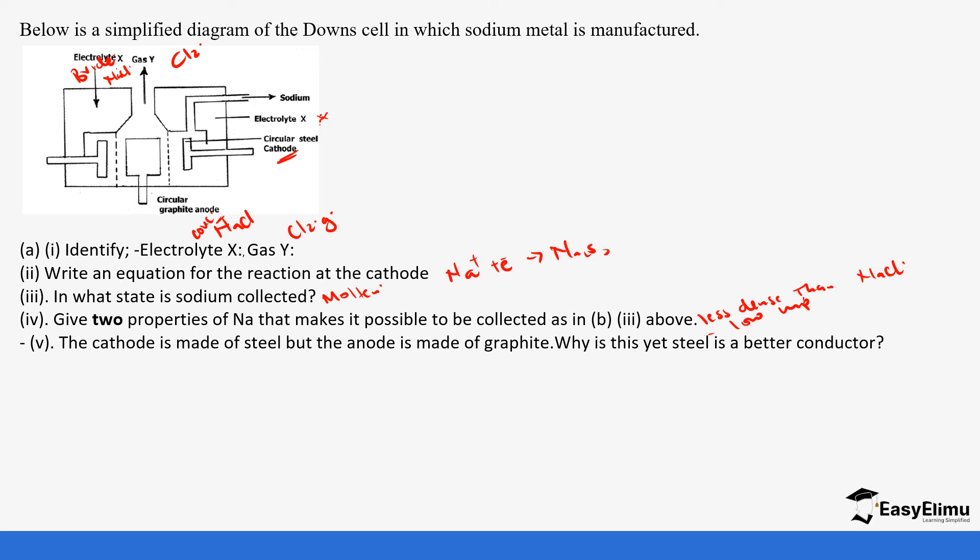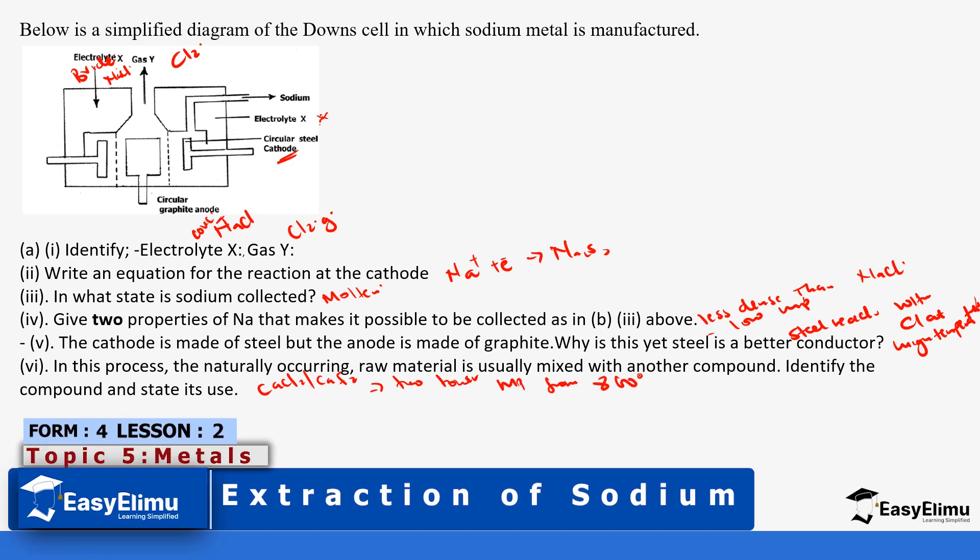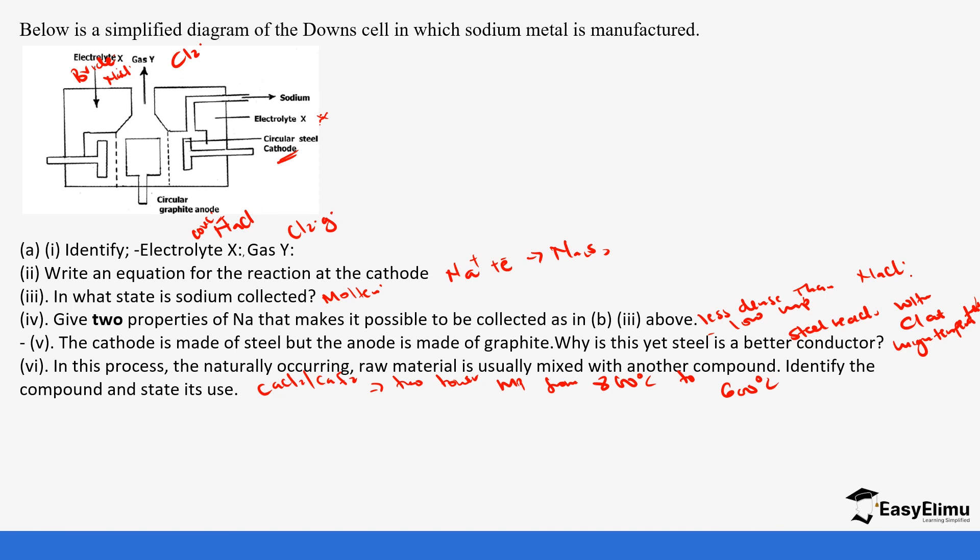The cathode is made of steel, but the anode is made of graphite. Why? We said that steel reacts with chlorine at high temperatures. In the process, the naturally occurring raw material is usually mixed with another compound. It is mixed with calcium chloride or calcium fluoride to lower the melting point from 800 degrees Celsius to 600 degrees Celsius. This is important for you to remember these temperatures, especially when you explain it.